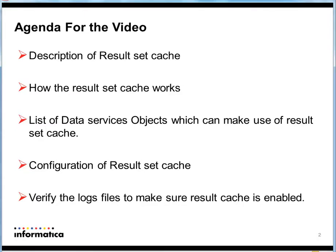The result set caching enables the data integration service to use the cached results of SQL data service queries and web service requests. Users that run identical queries within a short period of time can make use of this result set cache to decrease the runtime of those SQL queries. That's the main purpose of the result set caching — both SQL data service and web service requests can make use of it.